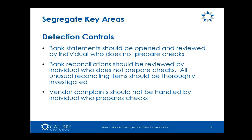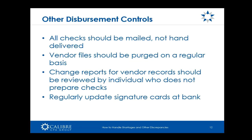Bank reconciliations need to be reviewed by someone who doesn't prepare the checks — make sure they are mathematically correct and any unusual reconciling items are investigated. Are there items that have been on there for months? Are there checks that haven't cleared — why is that? Checks should always be mailed, not hand delivered. Vendor files should be purged on a regular basis. If a vendor is already in the system, it's easy to create a fictitious invoice to that vendor and just change the address, so purge vendors you're not using. Change reports for vendor records need to be reviewed by someone who doesn't prepare the checks.